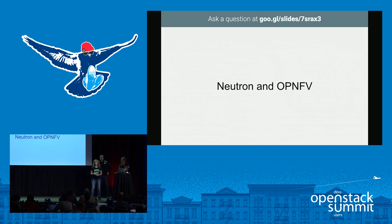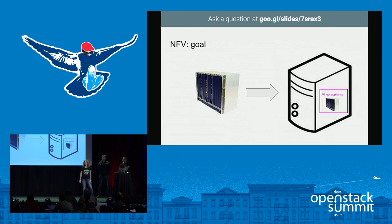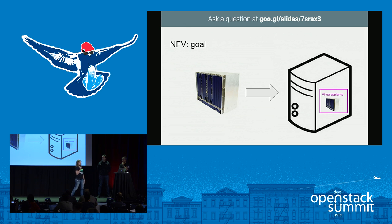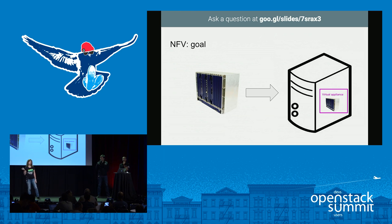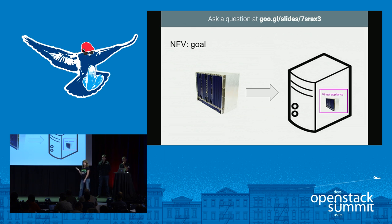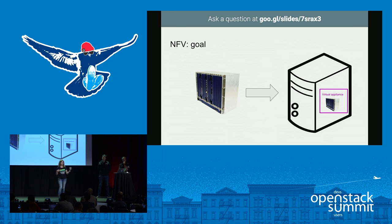Now let's see the relationship between Neutron and OPNFV. First, we need to understand what NFV is. The idea is very simple: it's to virtualize physical appliances used by telcos to make sure that traffic flows — things like radio equipment, routers, and firewalls. It's more or less what happened at the beginning of virtualization, where we had lots of physical servers that were difficult to maintain and not scalable. It's the same idea applied to network appliances.